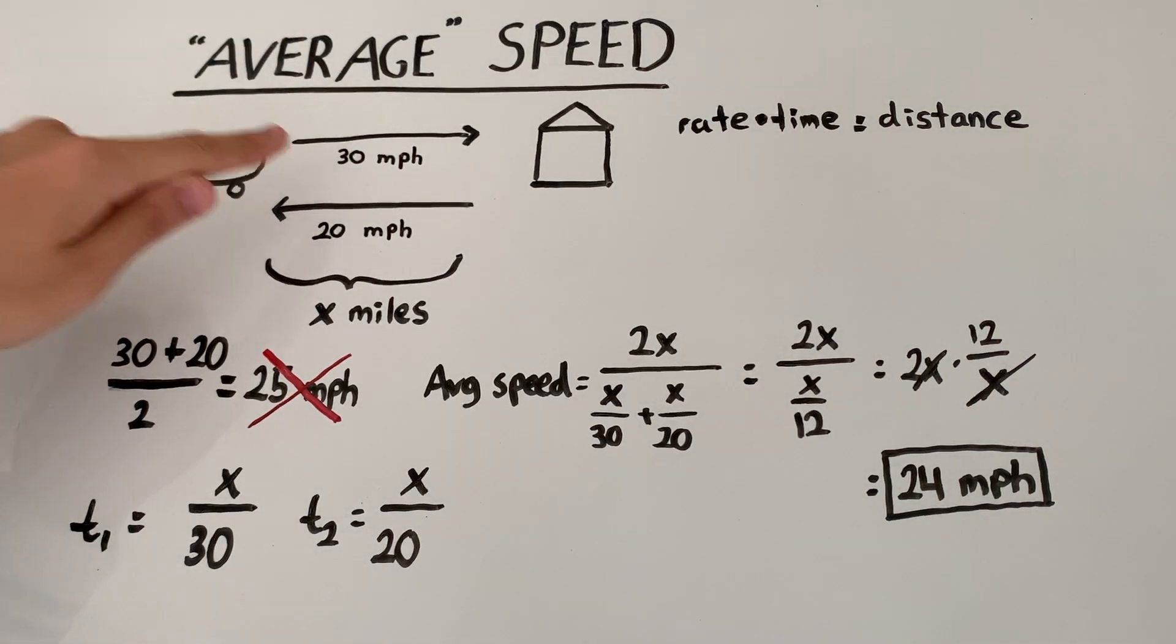Obviously, if we're going faster it'll take less time. If we're going slower then it's going to take more time, but this method is very deceiving because it seems to make so much sense at first, but once we dug a little deeper we found that it actually does not work. So the correct answer is 24 miles per hour, not 25 miles per hour.